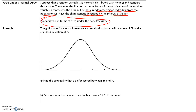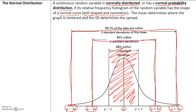Here's an example. Golf scores for a school team were normally distributed with a mean of 68 and a standard deviation of 2. One standard deviation gives us 70 and 66; two standard deviations give us 72 and 64; three standard deviations give us 74 and 62. So 68% of values fall within one standard deviation, 95% within two, and 99.7% within three.